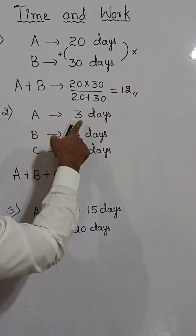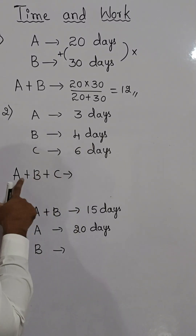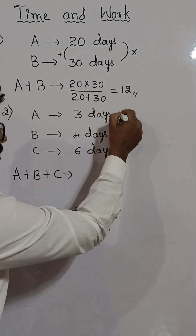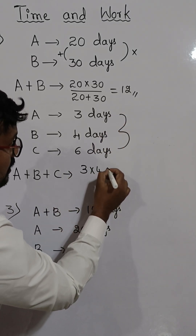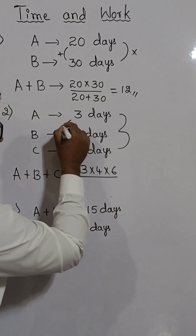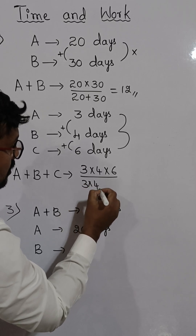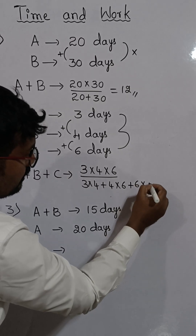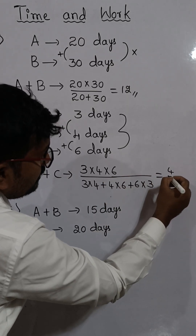A can complete a work in 3 days, B in 4 days, and C in 6 days. A, B and C together can complete the work using the product of the three numbers divided by the sum of their pairwise products. That is 3 into 4 into 6 divided by 3 into 4 plus 4 into 6 plus 6 into 3, which equals 4 by 3 days.